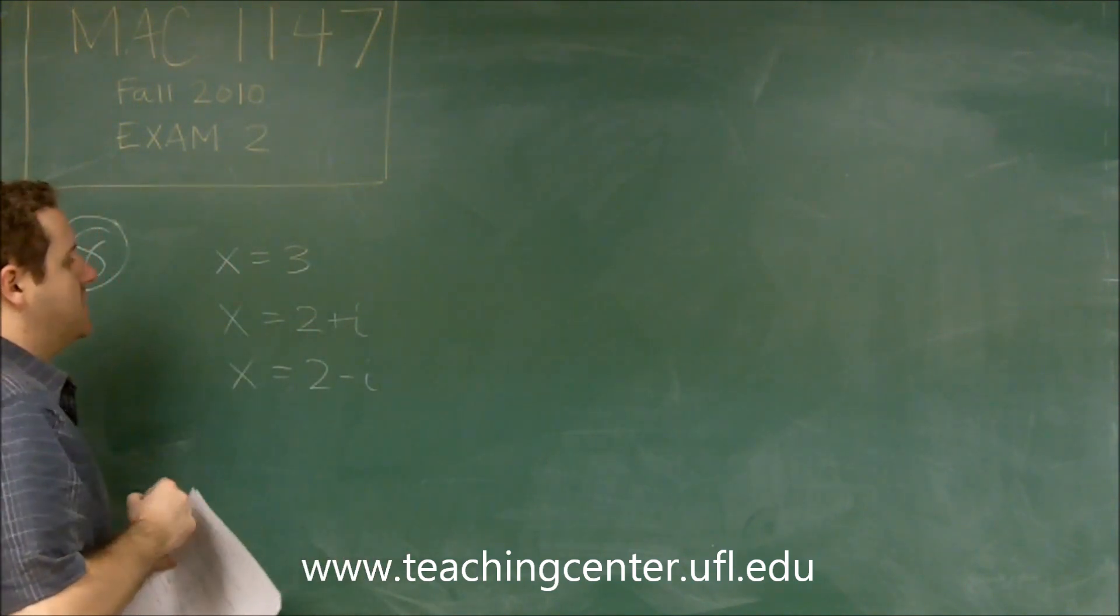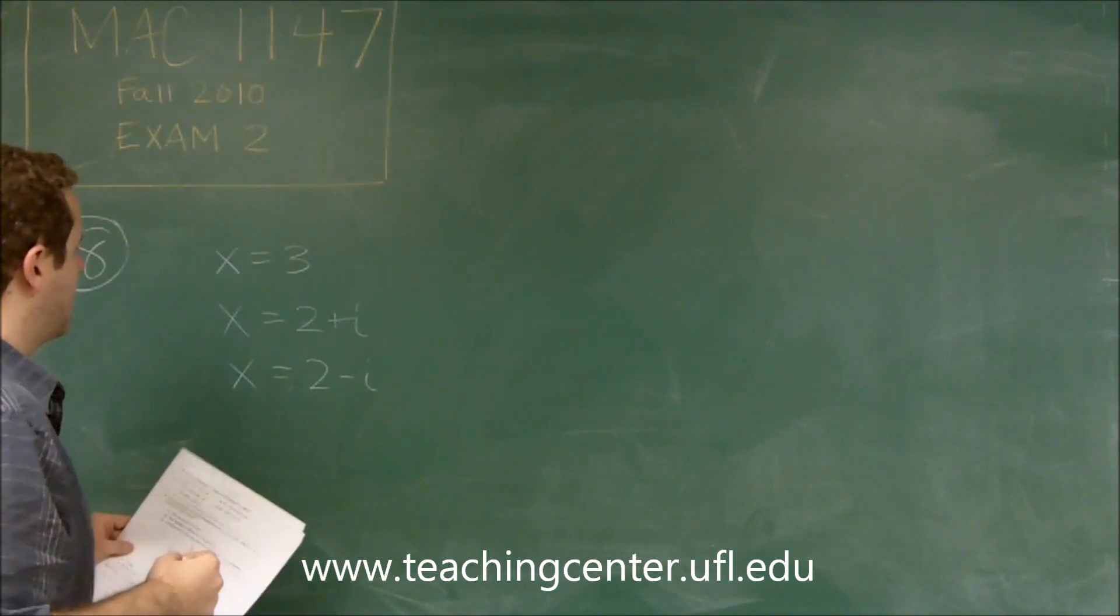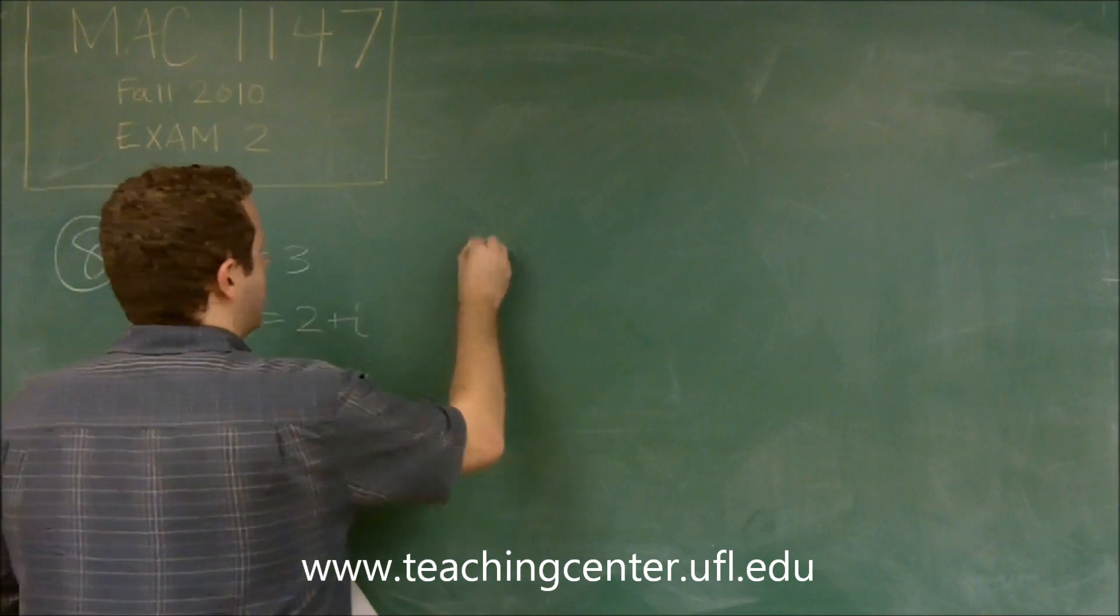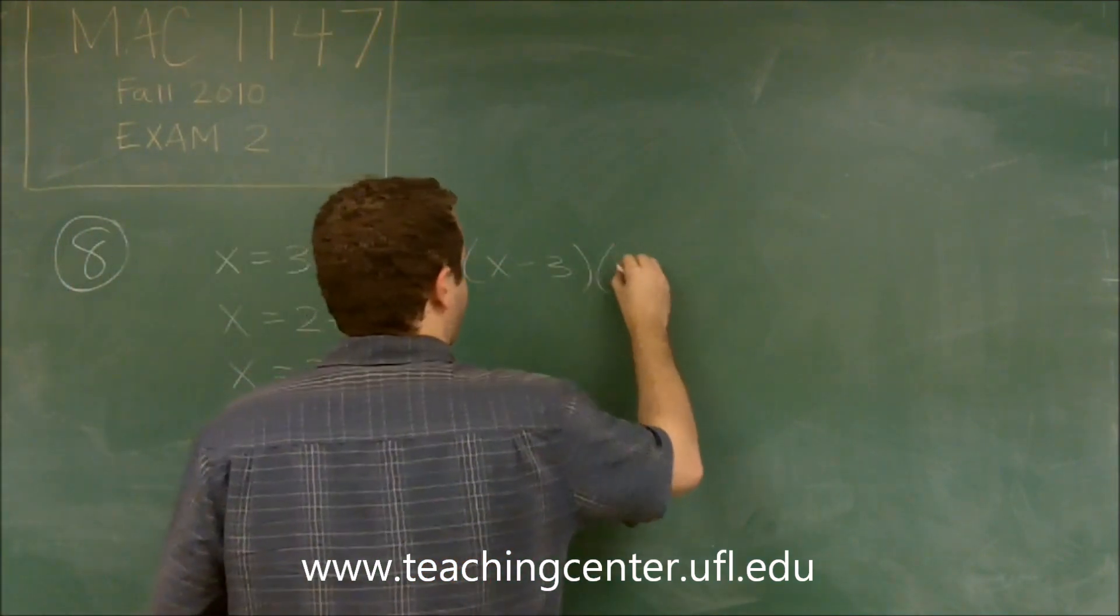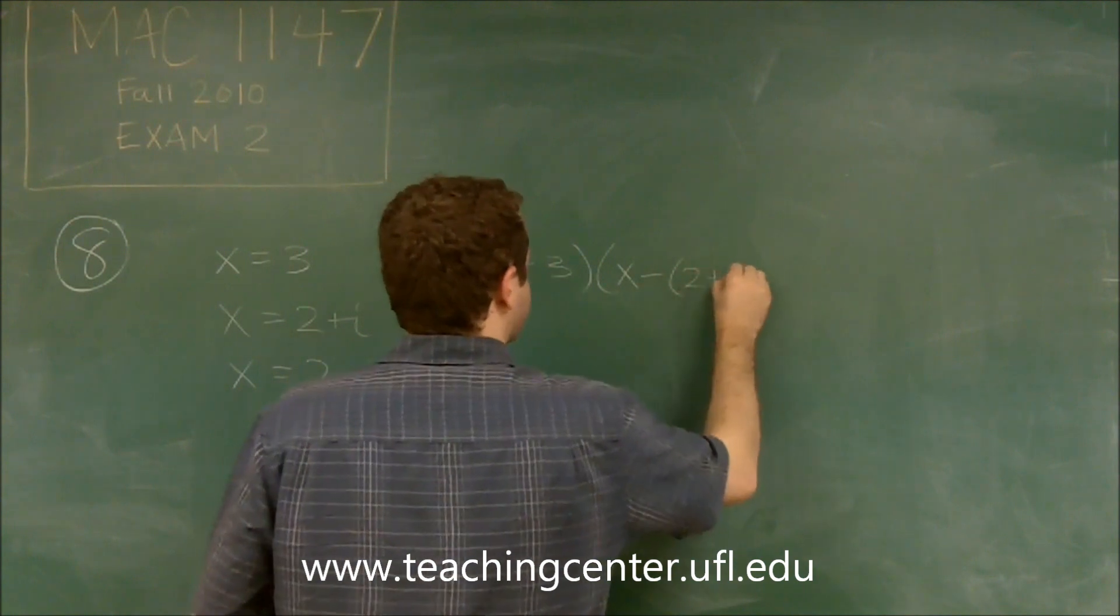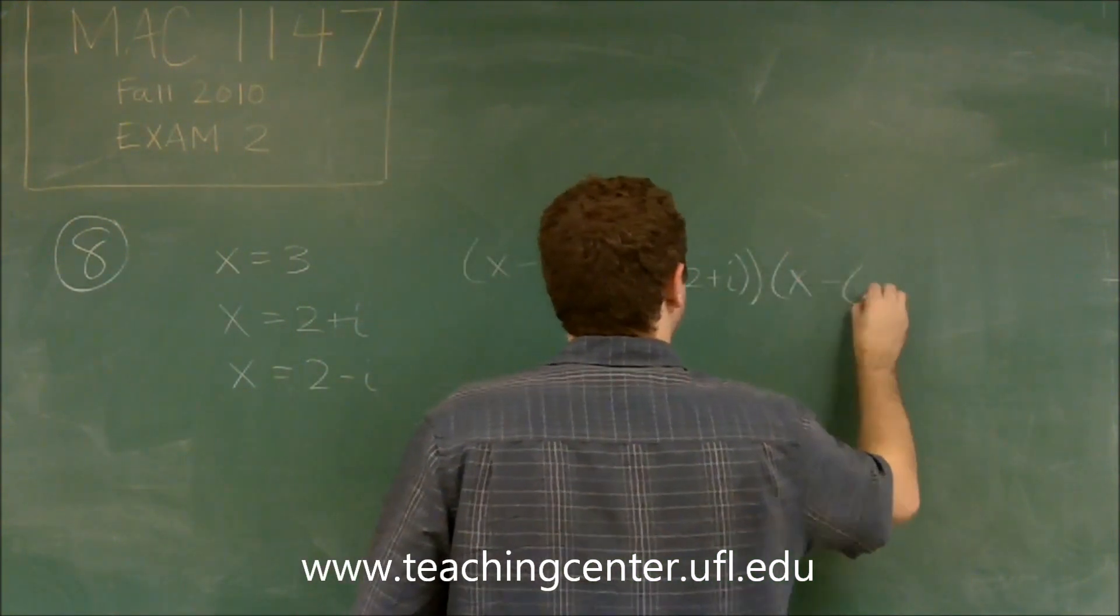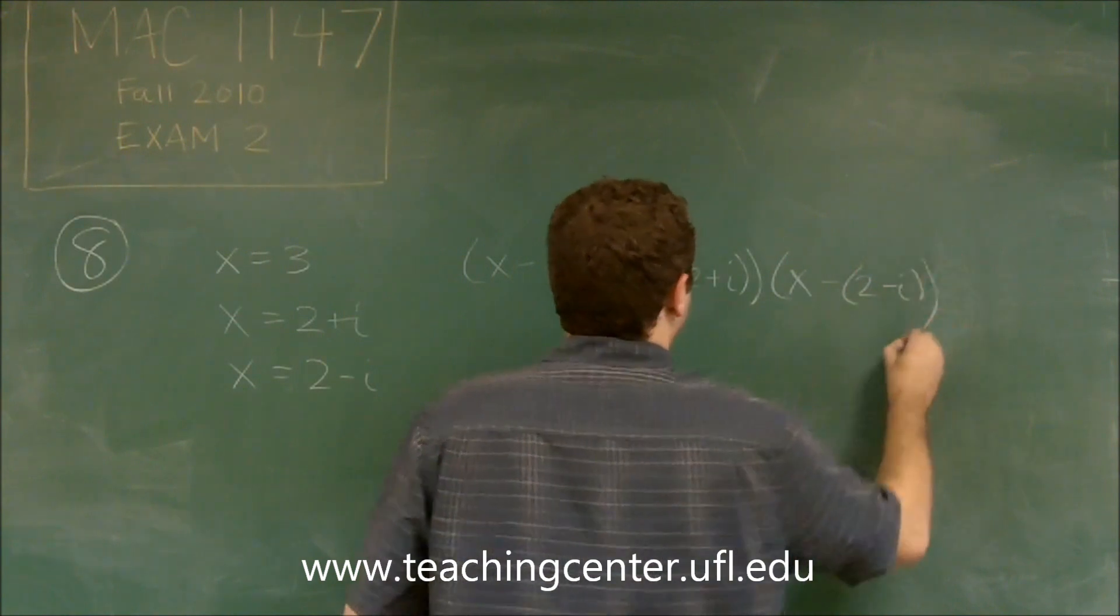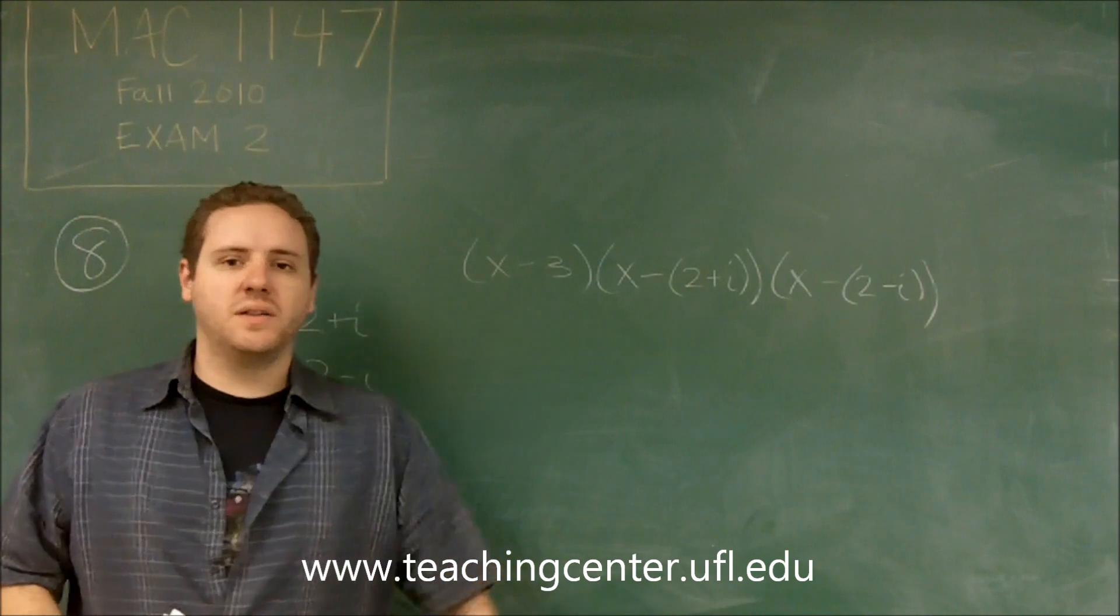So what we're going to do is express these as their factors and then expand it to find the actual polynomial. So here we have x minus three times x minus two plus i times x minus two minus i. So we need to figure out what all these are and then expand them.